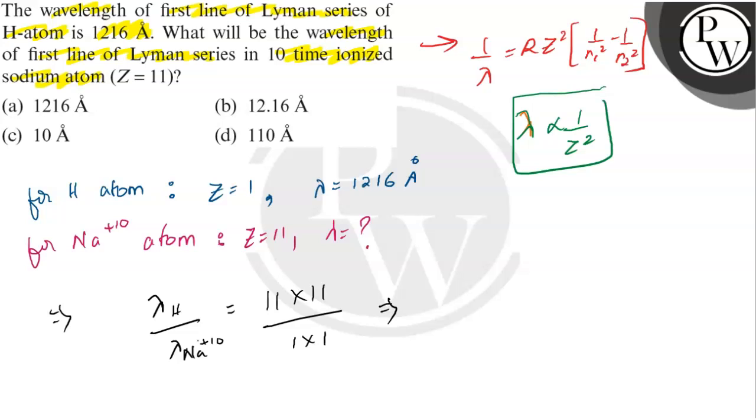This implies that lambda of Na plus 10 is equal to lambda of H by 11 into 11.